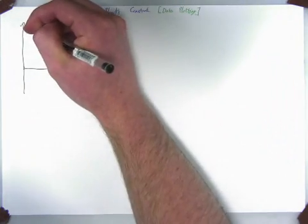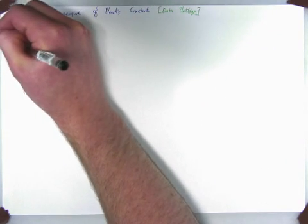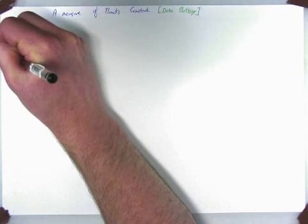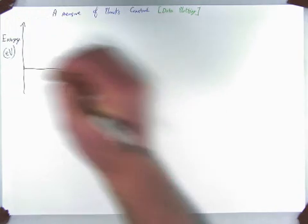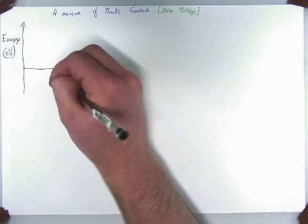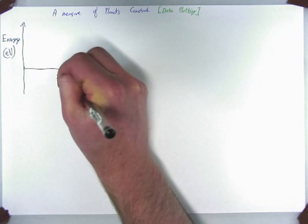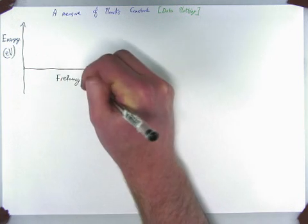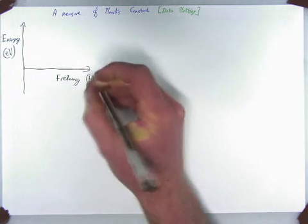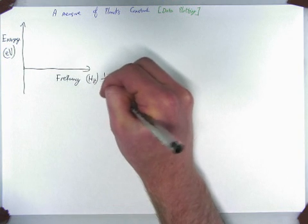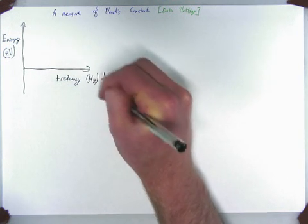And our vertical axis, our f(x) in this case, is actually our energy in electron volts. And our horizontal axis is our frequency, which is Hz, so hertz, or inverse seconds.